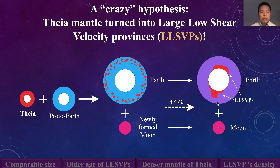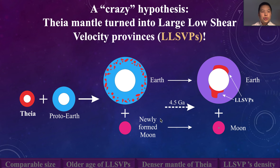In this study, we are going to provide four lines of evidence to support our hypothesis. First, we are going to show the LLSVPs have comparable size to the Theia mantle. Then we are going to show that LLSVPs are possibly older than the Moon formation, because the Theia mantle already existed. So it's reasonable that the LLSVPs are older than the Moon if our hypothesis is right. And then we are going to show the density of the Theia mantle through giant impact models and lunar geochemistry. And in the end, we are going to use mantle convection models to see how the Theia mantle could sink down to the CMB and form LLSVP-like structures.